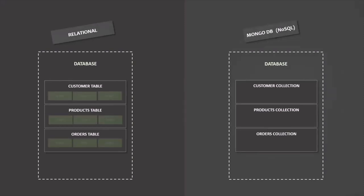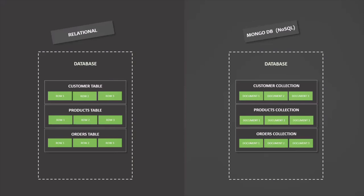In a relational database, each table has rows, and each row contains data about a single entity — for example, one customer, one product, or one order. But in MongoDB, each collection consists of one or more data structures called documents. You can think of a document as a table row. Each document also contains data about one single entity. So a collection is basically a collection of documents — for example, a customers collection, a products collection, or an orders collection.